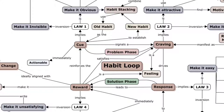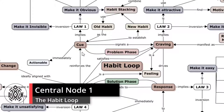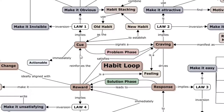Let's start with the habit loop. The first thing to note is that it usually starts at the cue, which is the problem phase - the trigger. You notice something, for example your phone buzzes, which signals a craving - who could it be? That drives a response to check your phone, and that leads to a reward. The reward is just satisfying the craving and reducing the uncertainty of who texted you.